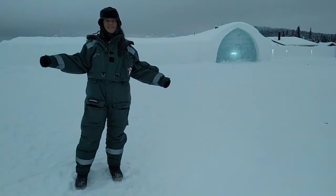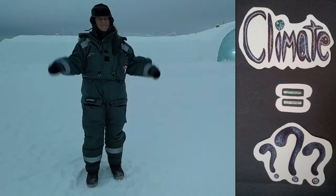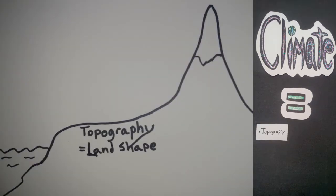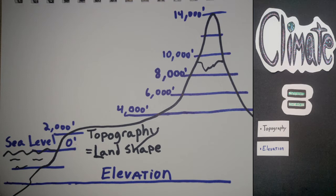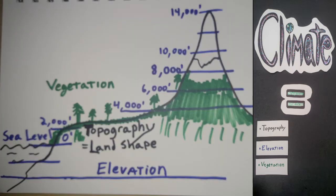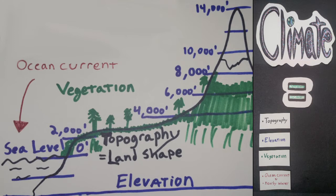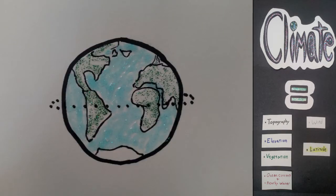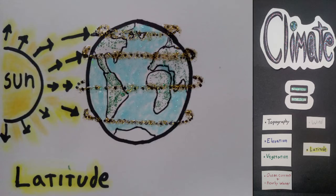How do scientists understand these things and define them? The climate is affected by the shape of the land, called topography. Elevation is a factor from sea level at zero feet to the top of the mountains. With the addition of plants is the vegetation factor. The ocean currents and proximity to water sources are also elements of the climate. Wind patterns play a factor, especially in moving weather conditions. Climate has global factors too, like latitude. Sunlight hits the equator more directly than the North Pole, affecting day length and heat intensity.